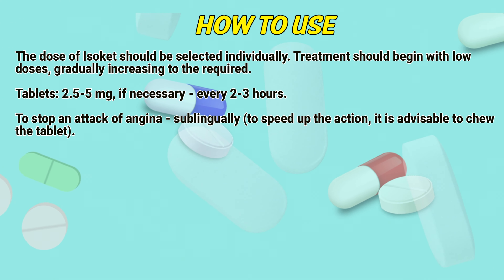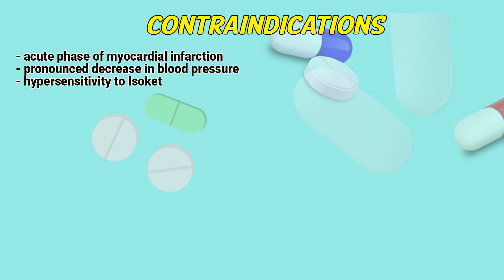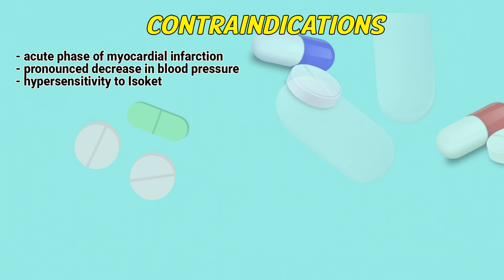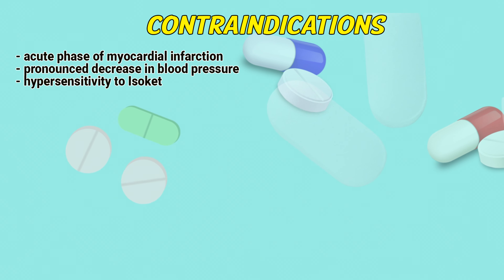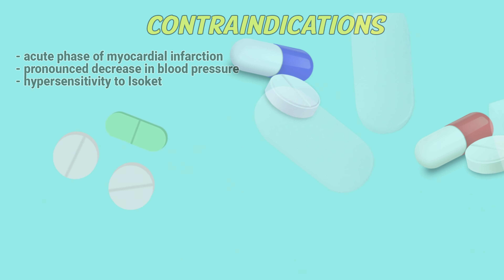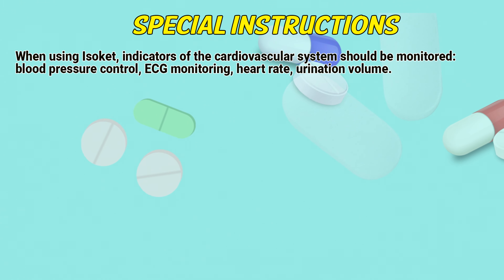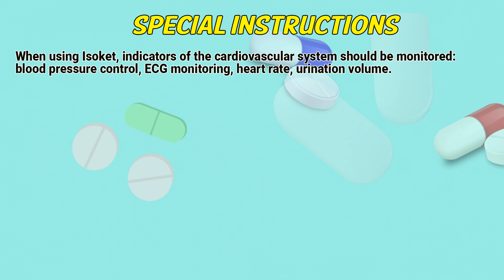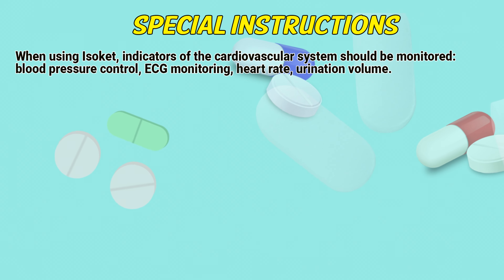How to use: The dose of Isoket should be selected individually. Treatment should begin with low doses, gradually increasing to the required level. Tablets 2.5–5 mg, if necessary every 2–3 hours. To stop an attack of angina, administer sublingually. To speed up the action, it is advisable to chew the tablet.